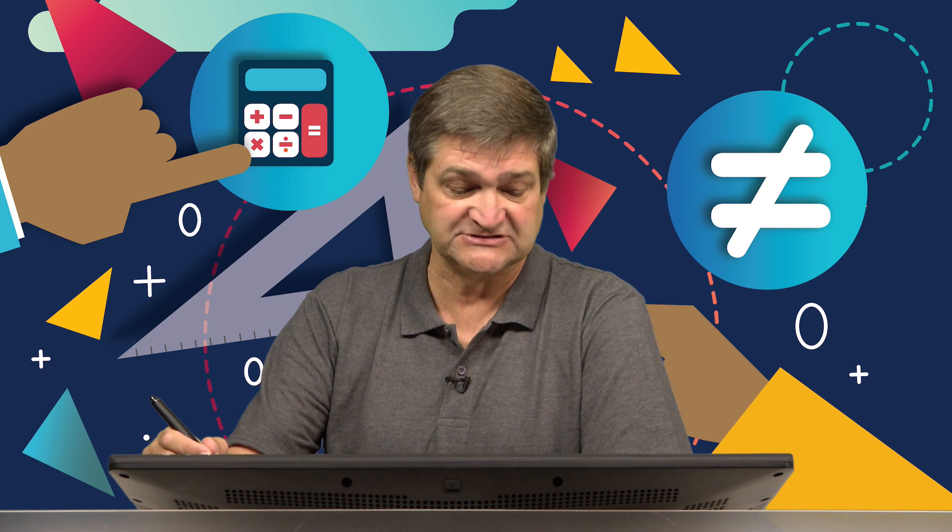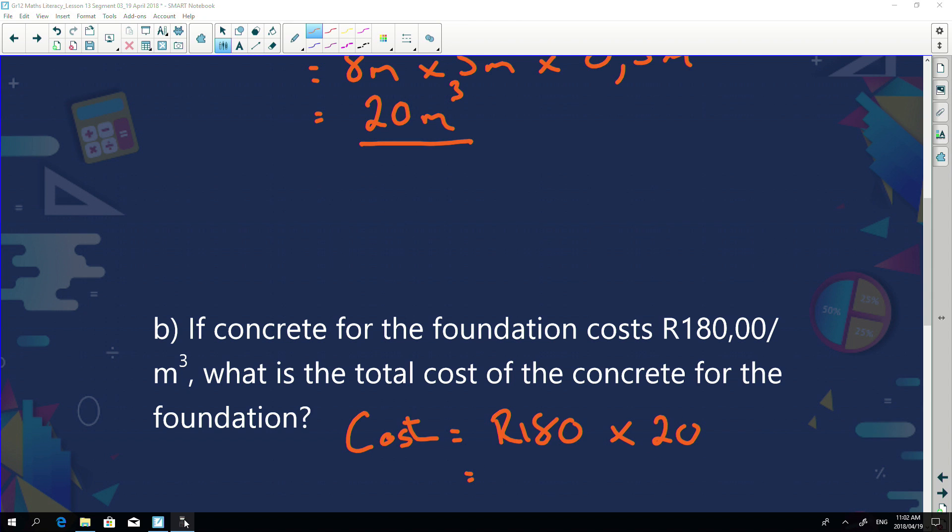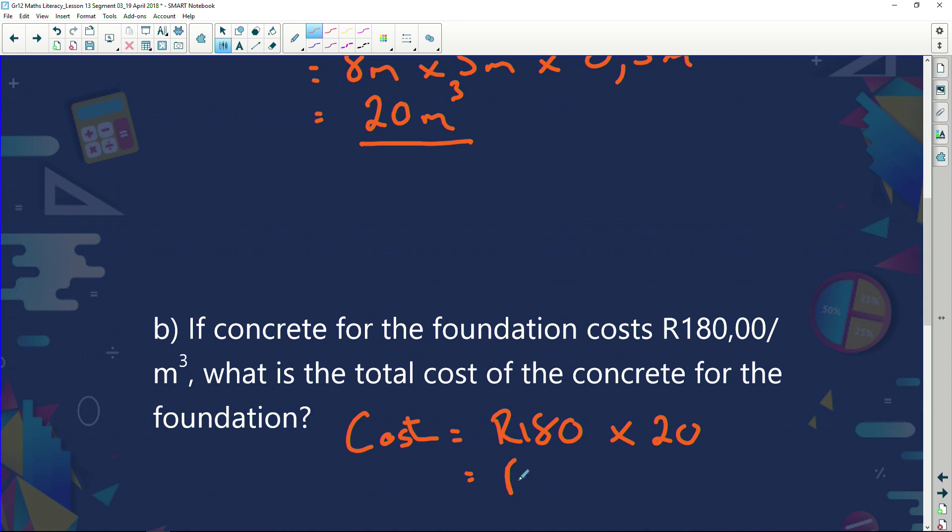My next question says: if concrete for the foundation costs 180 rand per meter cubed, what is the total cost of the concrete for this foundation? Well, the cost is going to be quite simple, isn't it? Because I'm told I've got to pay 180 rand for every cubic meter, and I've got 20. So I'm just going to say 180 times 20. And we've got 20 already on our calculator, times it by 180, and I get 3,600 rand.